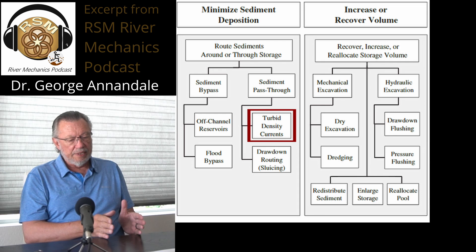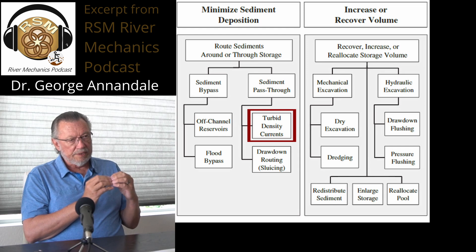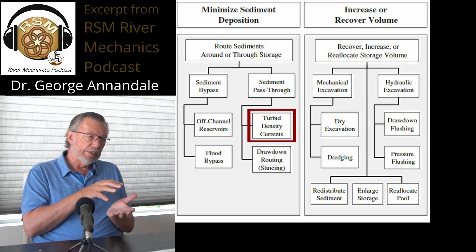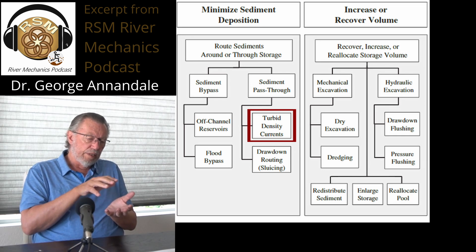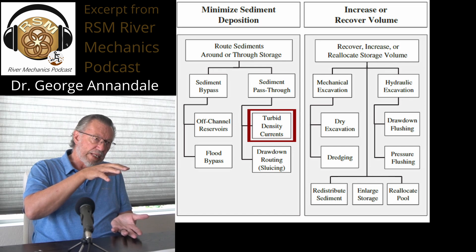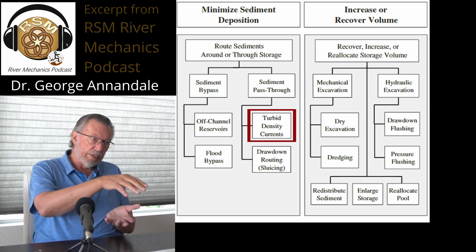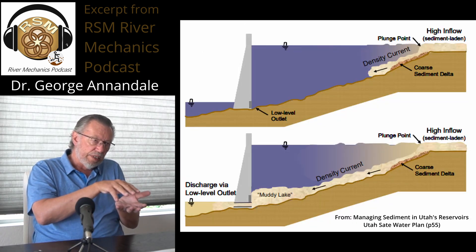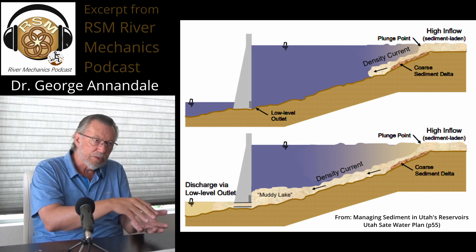Another way is in certain cases, like in the case of Rogan, the character of the sediment is such that density currents form. With a density current, if you have a lot of very fine materials — silt and clay — and the river transports a lot of that, that water, because of the silt and clay that it contains, is denser than the clear water in the reservoir. So if this river flows into the reservoir, because it's denser, it goes along the bottom and forms what is called a density current.